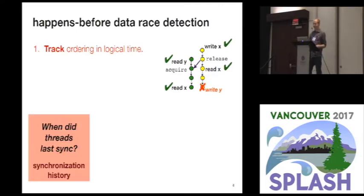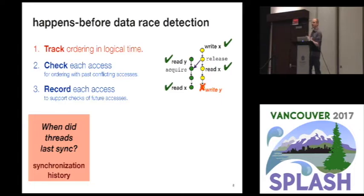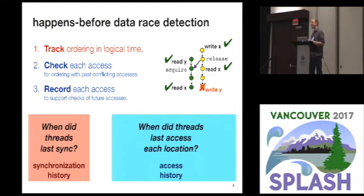The data race detector, as part of its analysis metadata, is going to have to keep what I'll call a synchronization history, which will allow us to answer analysis questions like: when did these two threads last synchronize with each other? The other job a data race detector has is that on every memory access, we need to do a check to ensure that access is well-ordered with respect to all previous memory accesses to the same location. If the check resolves safely, we record information about the logical time of this access so future accesses can be analyzed with respect to it. For this, we need an access history for every memory location in the program.